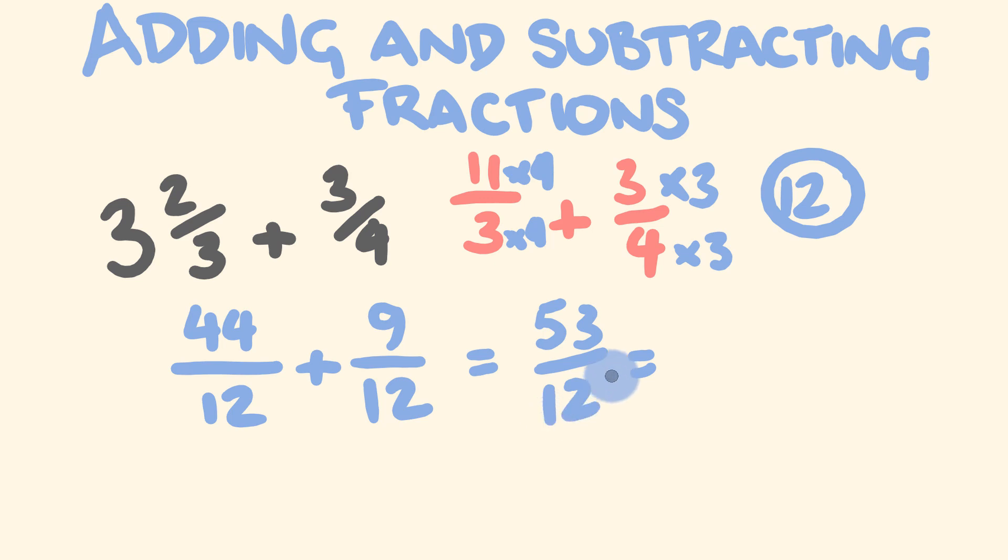We can simplify this further because we can turn this back into a mixed number. How many times does 12 go into 53? Well, it goes in 4 times. That's 4 twelves of 48. And we have a 5 remainder. So that's 5 over 12. And we can't simplify that any further. So that is our answer. Anyway, what about I give you a couple of examples to now do yourself?